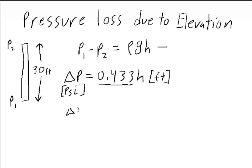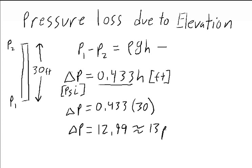So we'll have delta P is equal to 0.433 times 30, which is equal to 12.99, which is nominally equal to 13 psi.